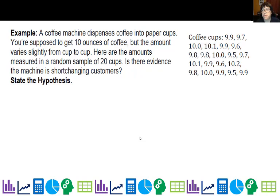So let's go ahead and look at a coffee machine that dispenses coffee in paper cups. You're supposed to get 10 ounces of coffee, but the amount varies slightly from cup to cup. Here are the amounts measured in a random sample of 20 cups. Is there evidence that the machine is shortchanging customers? Whenever we're looking to see if we have evidence, first of all we have to say what are we assuming going in and what is the possible alternative that we might change our mind to.